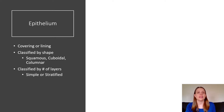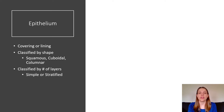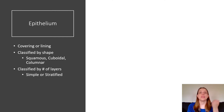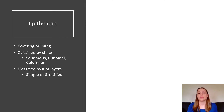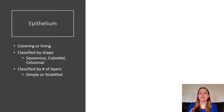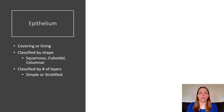Before we look at specific kinds of tissues, I want to introduce epithelium in general. Epithelium is always a covering or a lining. It covers the outside of my body — your skin is epithelium. It lines your mouth, esophagus, and stomach. It lines your blood vessels. Any hollow organs are going to be lined with epithelium.